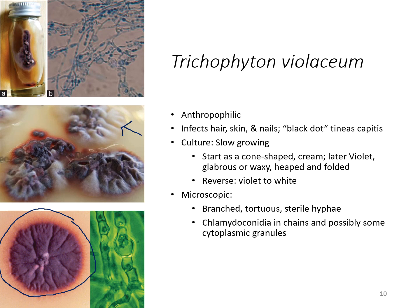The microscopic appearance — there are generally no macroconidia or microconidia. They form chlamydoconidia, where you have these large pot-bellied looking structures in the center. You can see some along the top as well where they kind of just pop out along those hyphae.